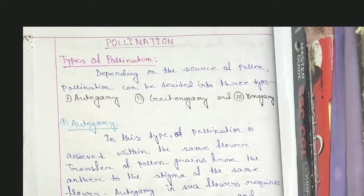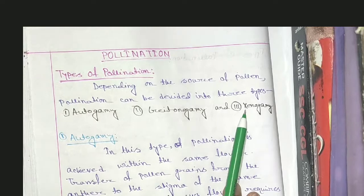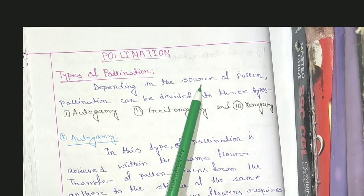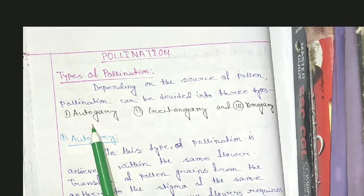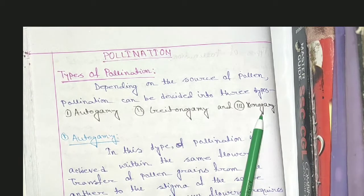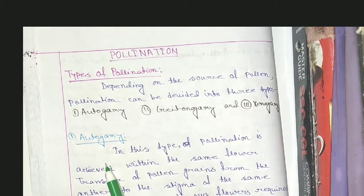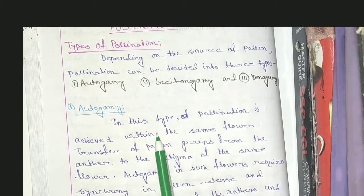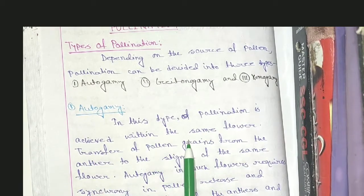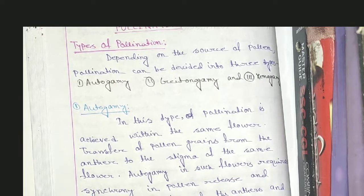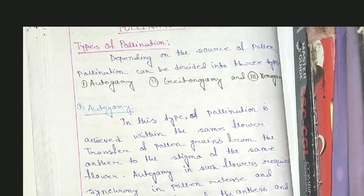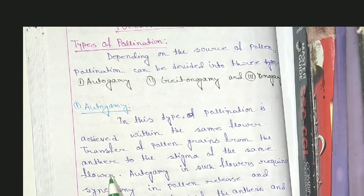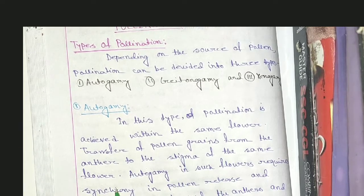Now, the types of pollination. Depending on the source of pollen, pollination can be divided into three types: autogamy, geitonogamy, and xenogamy. In autogamy, pollination occurs within the same flower — that is, transfer of pollen grains from the anther to the stigma of the same flower. 'Auto' means own.